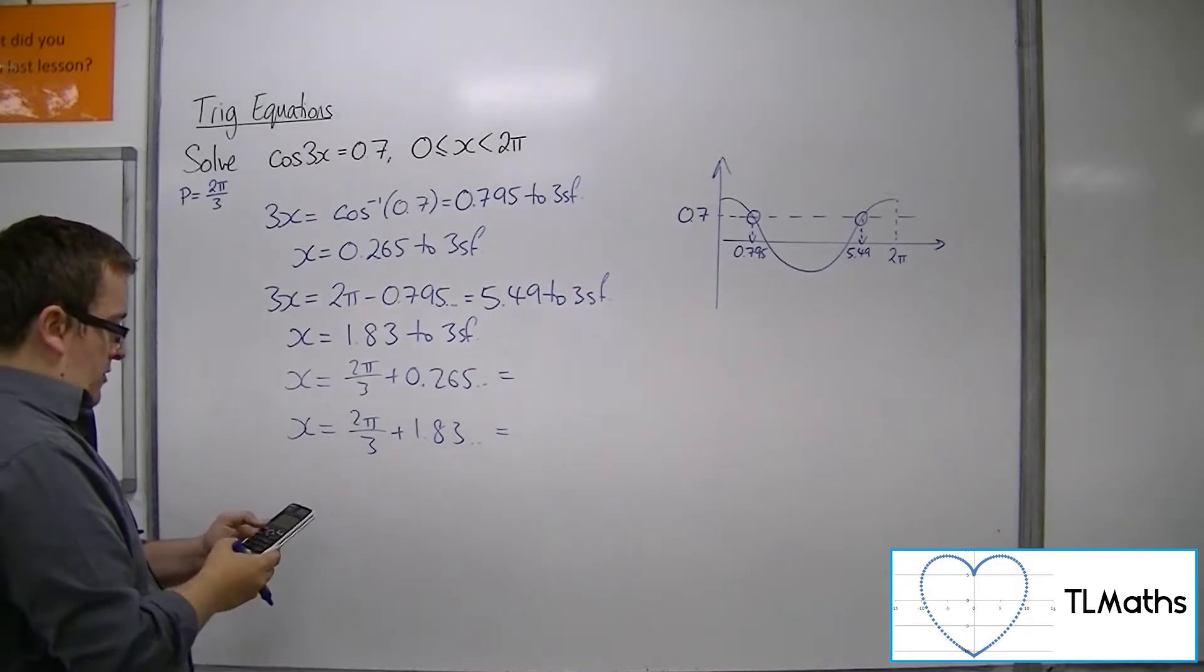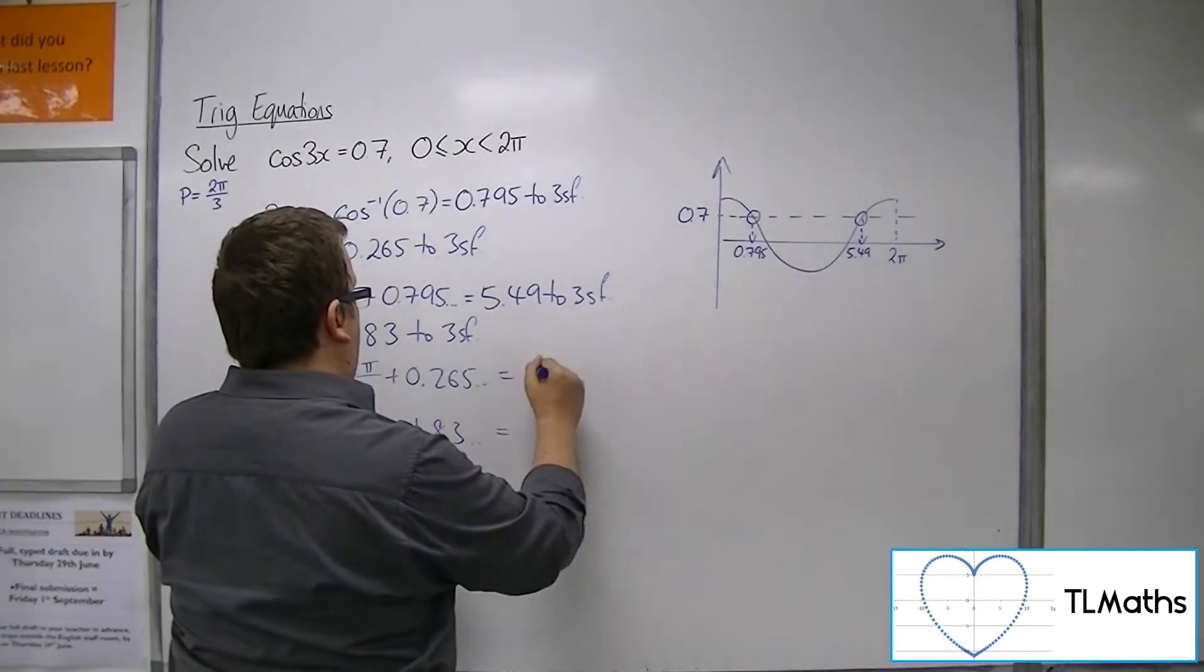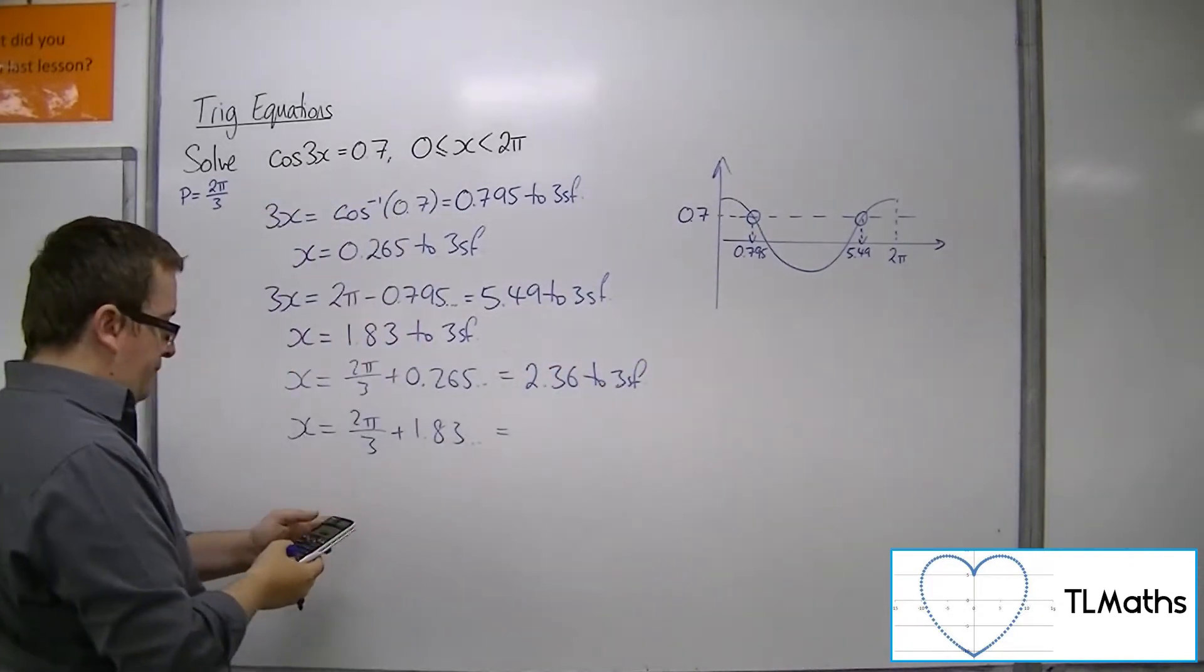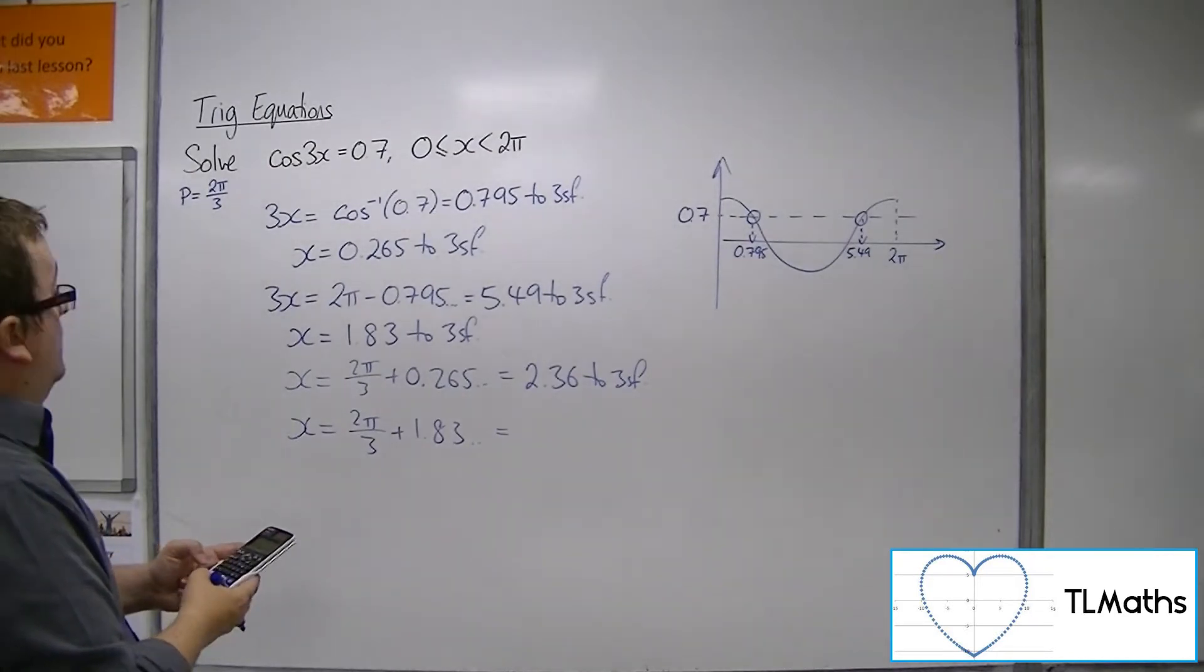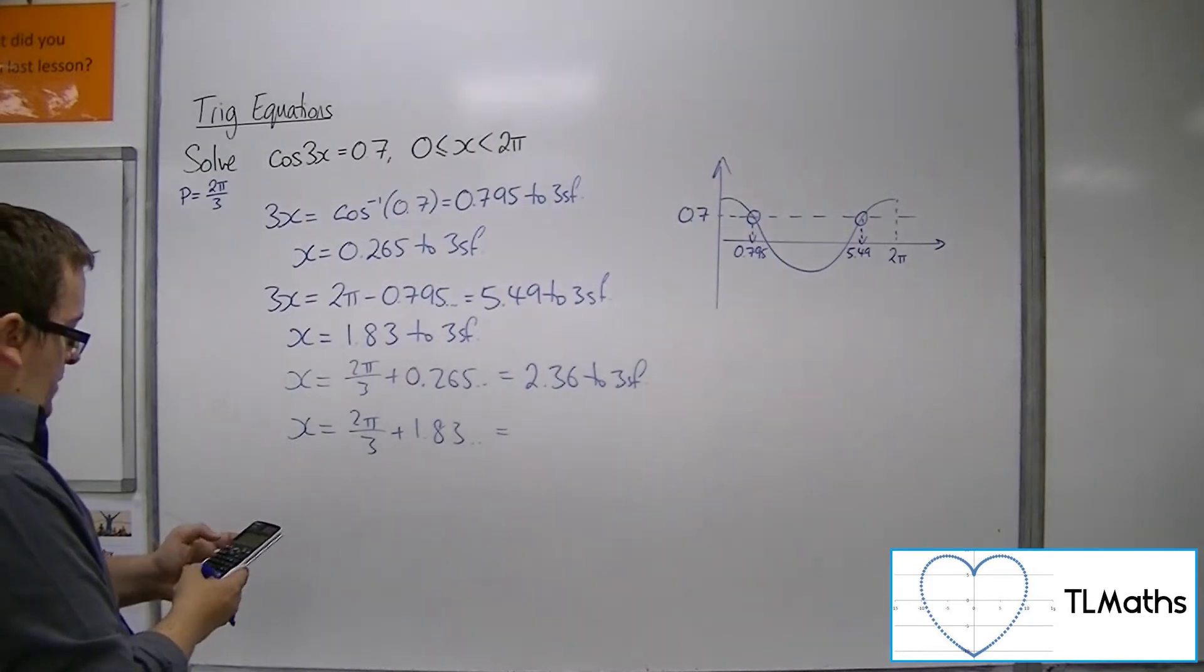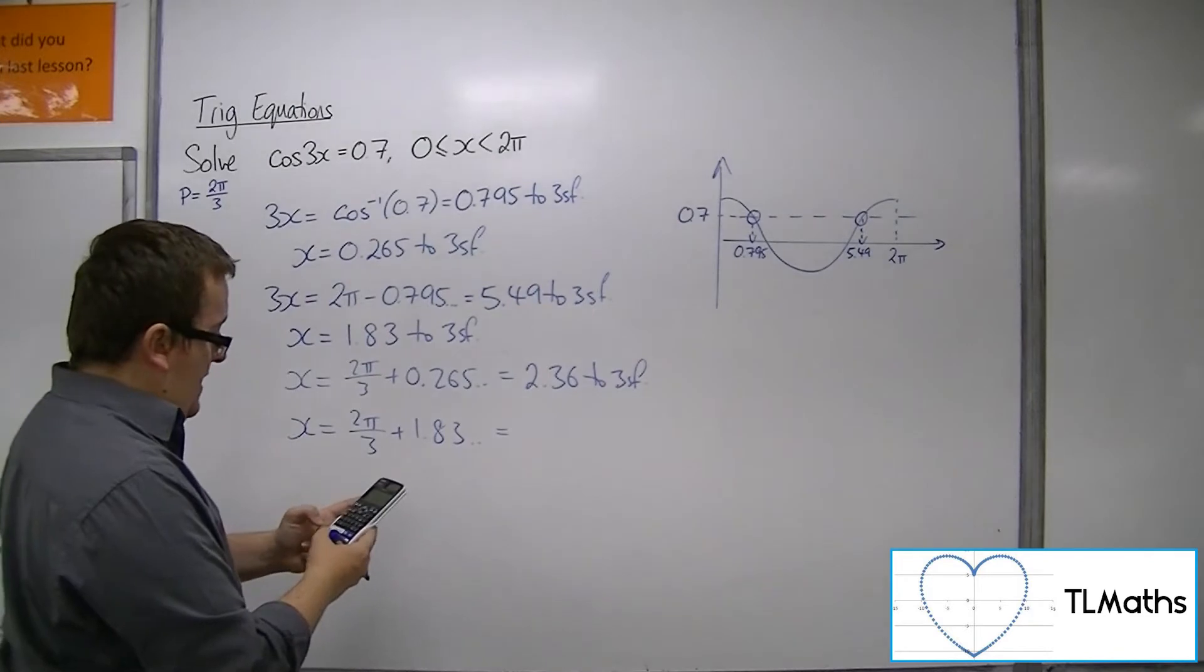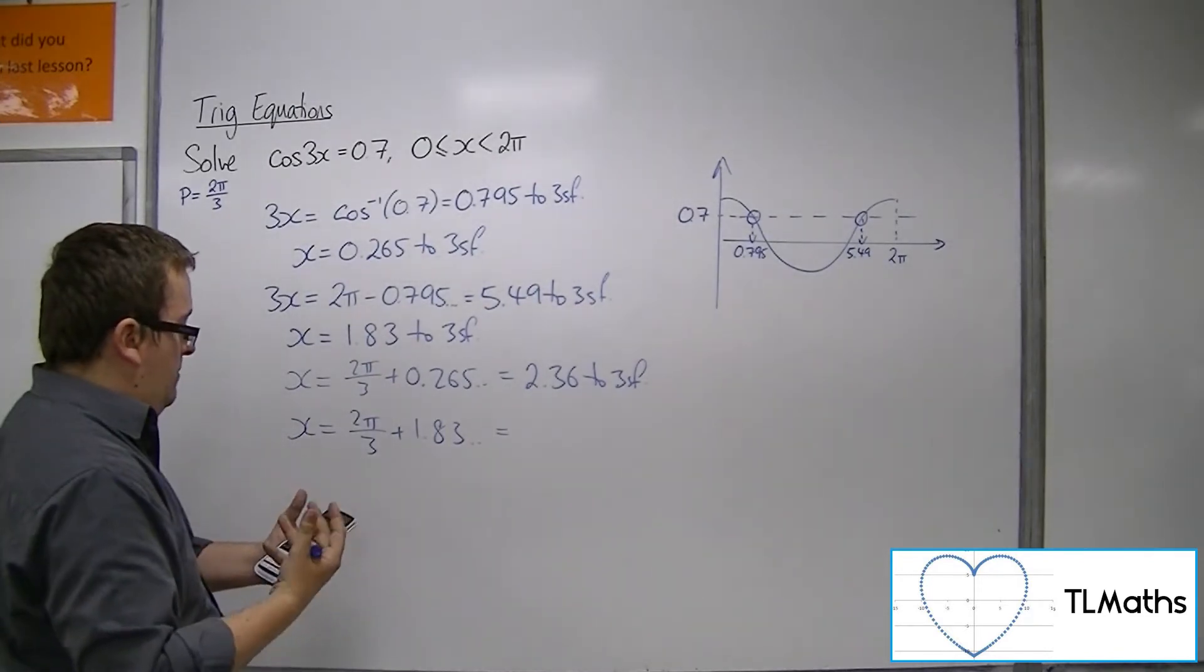So 0.265 + 2π/3 = 2.36 to 3 significant figures. And for the other value, 1.83 + 2π/3 = 3.92.